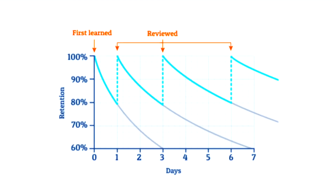A good tip to understand graphs is in the way you approach them — always start with what the X and Y axis represent, and then things become a lot easier. The two actions we need to take based on the forgetting curve are: we need to interrupt the forgetting curve, because every time we interrupt it we get that refreshed memory spike. We also need to start with our repetitions closer together and then space them out gradually, because we forget most of the information shortly after we've reviewed it the first couple of times.